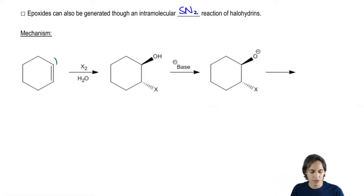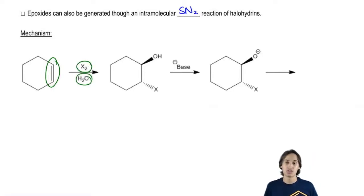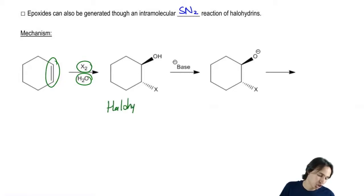Basically, remember that I've got a double bond and that double bond is exposed to diatomic halogen and water. What's going to happen is that I get a halohydrin. You guys should all be able to follow up to this point. Notice that the stereochemistry is once again anti.